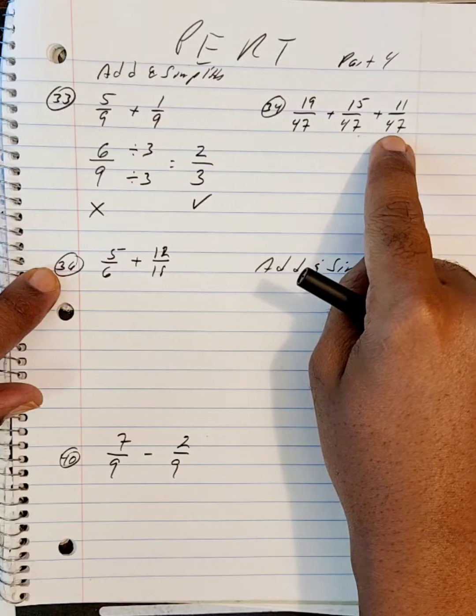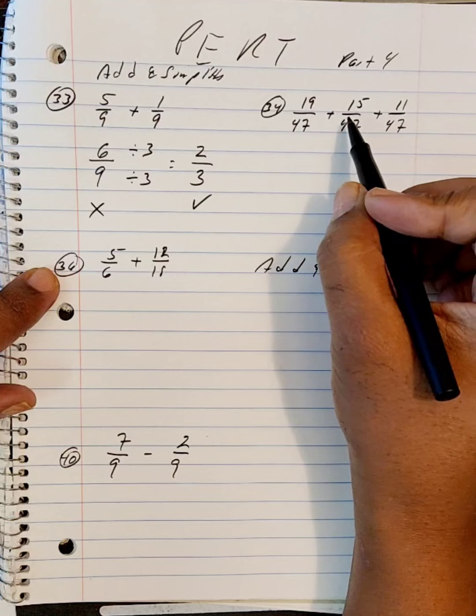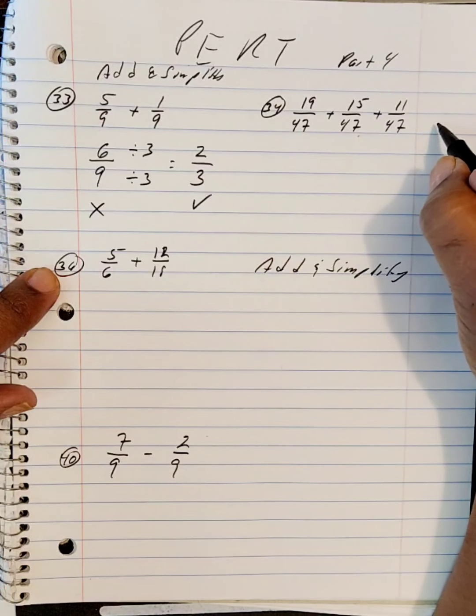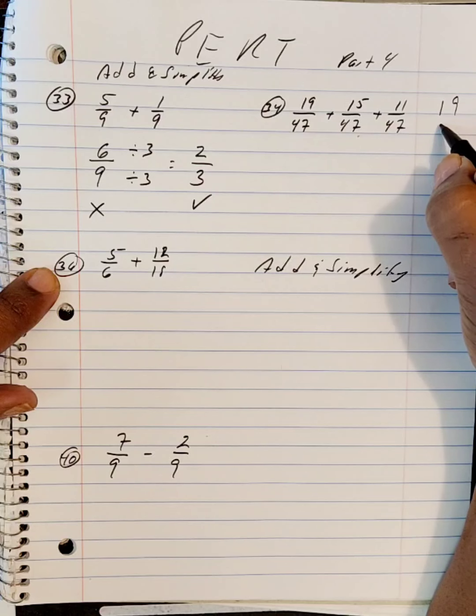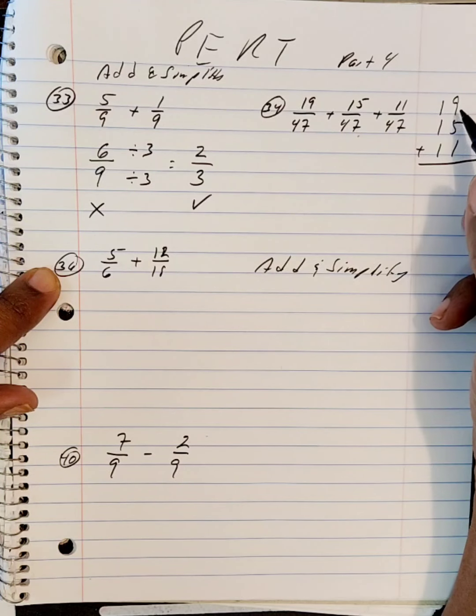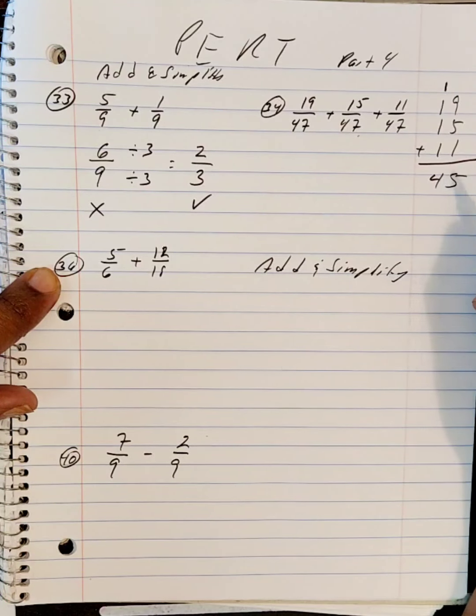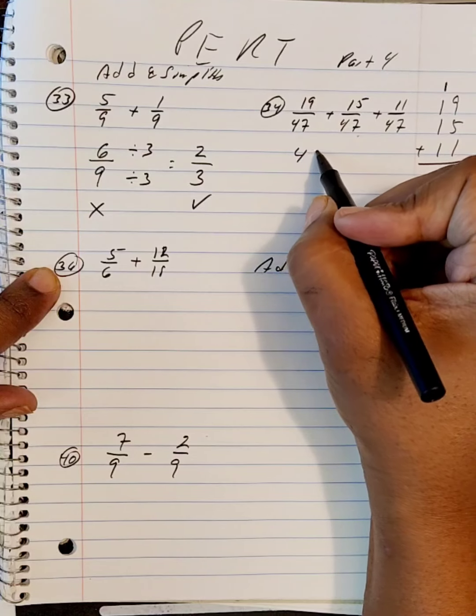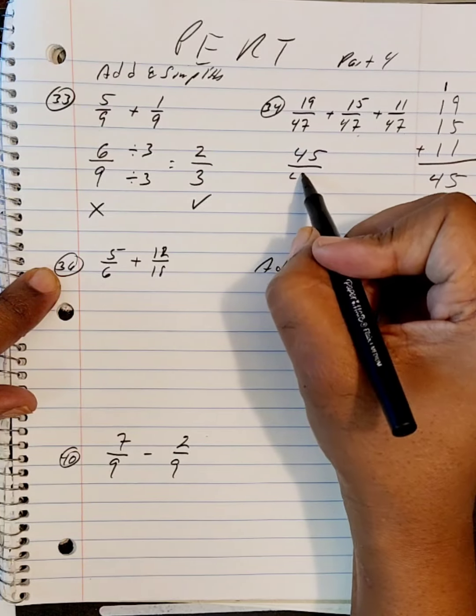Okay, this again, add and simplify. So all the denominators are the same, so we can add the numerators. This will be 19 plus 15 and 11. I'm going to add those together. 1 and 9 makes 10, plus 5 is 15, carry my 1, and that makes 4.